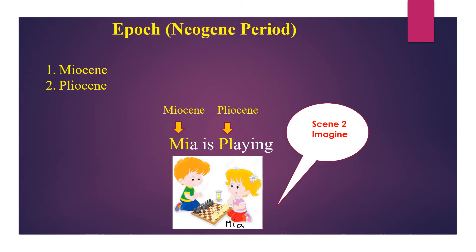Scene number two is for remembering the epochs in Neogene period. There are two epochs: Miocene and Pliocene. Imagine a scene of a girl named Mia who is playing. The sentence is: Mia is playing. From Mia, remember Miocene. From playing, remember Pliocene. So remember: Mia is playing, for Miocene and Pliocene.